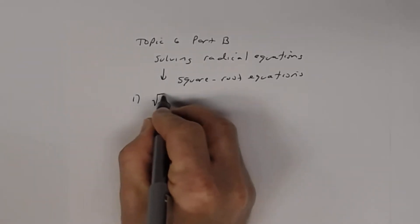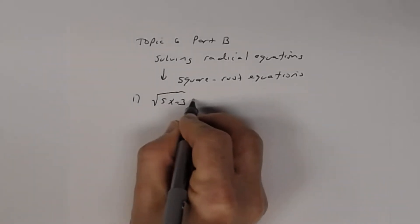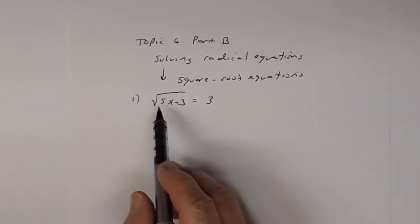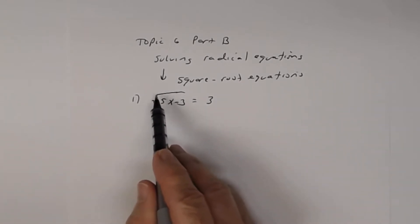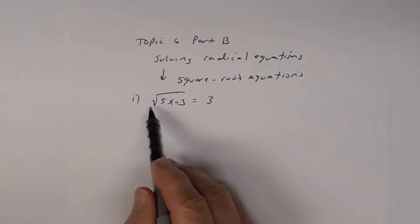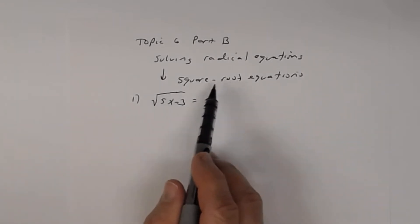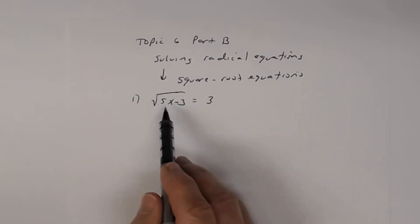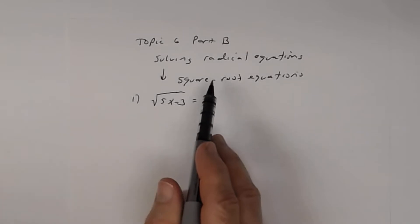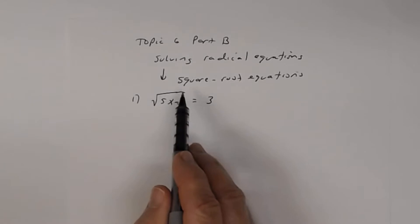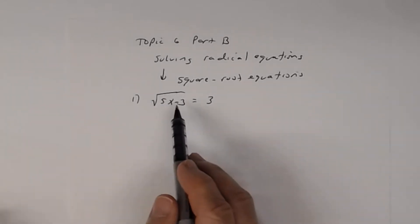Number one: we have the square root of 5x minus 3 equals 3. Notice this is a square root equation — the index has no number, so it's understood to be 2. Also notice, and this is important when solving a square root equation, you want to make sure that the radical is by itself. That's true for any radical equation, whether cube root, fourth root, fifth root, and so on. In this case, it already is.